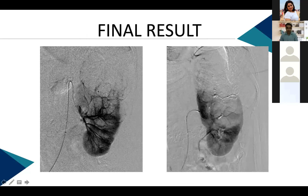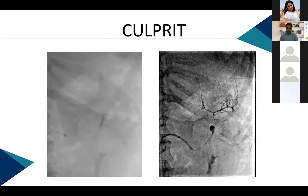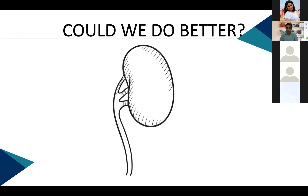Good control over bleeding was achieved, but at the cost of some nephron loss — the very thing the exercise was meant to prevent. The culprit was a change in the balloon morphology during glue injection. Since AML vessels lack an elastic lamina and are similar to intracranial vessels, there is always a risk of rupture. The lesson: careful watch on balloon morphology during injection — any change should prompt stopping the glue injection to seal off the region rather than pulling the balloon back.